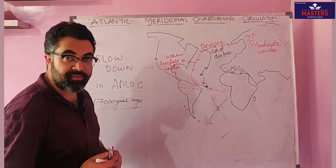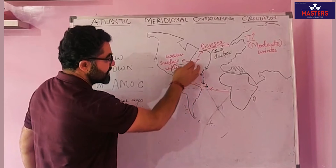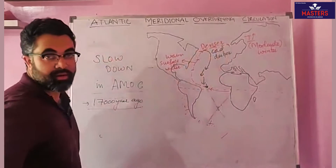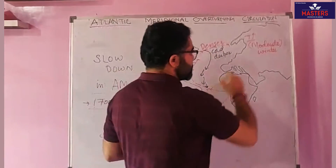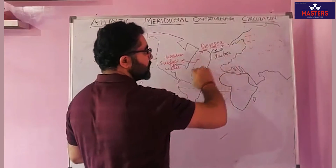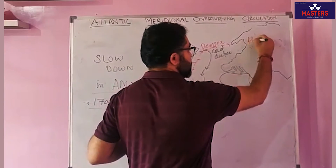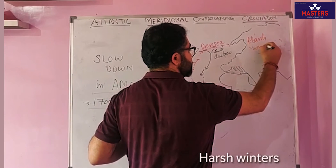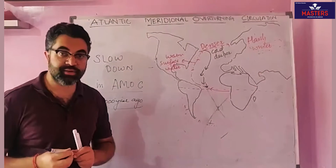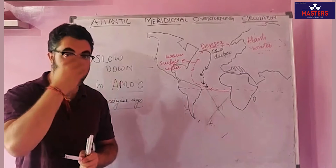What will happen with this slowdown? If the movement of surface water is less, the moderating conditions will not take place because the warm water will not reach the European coast. If warm water doesn't reach the European coast, the result will be very harsh winters in European regions, because there won't be any moderation effect.